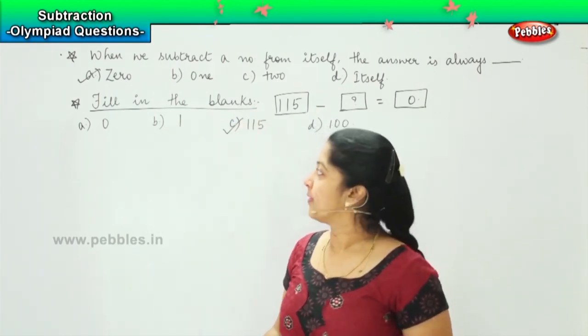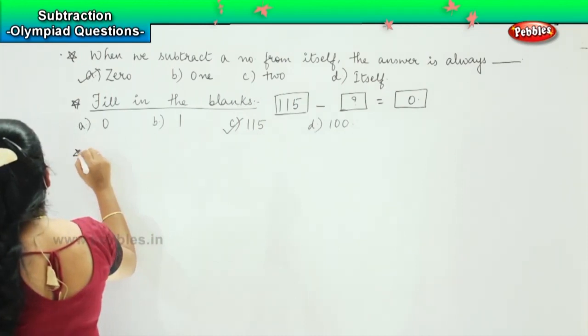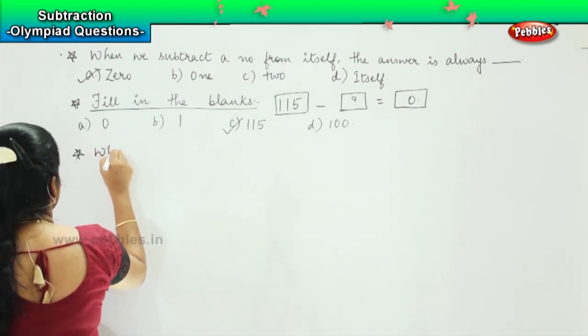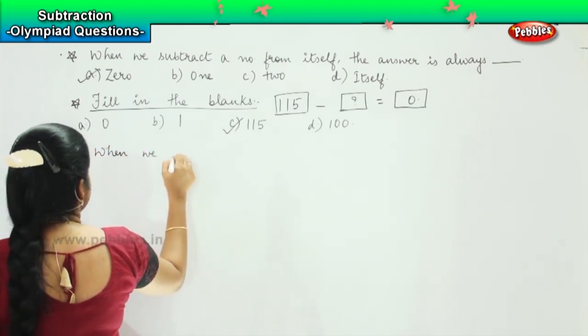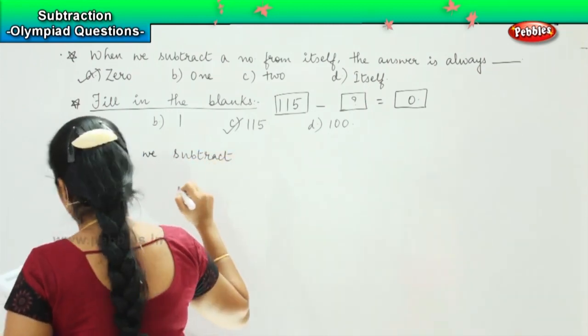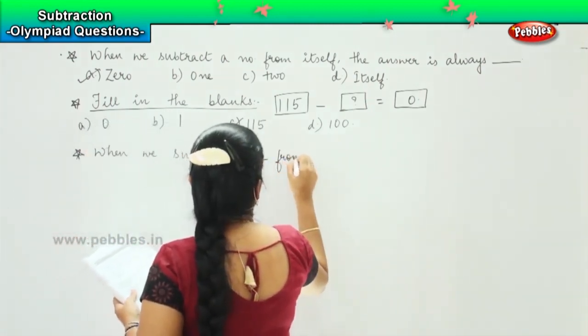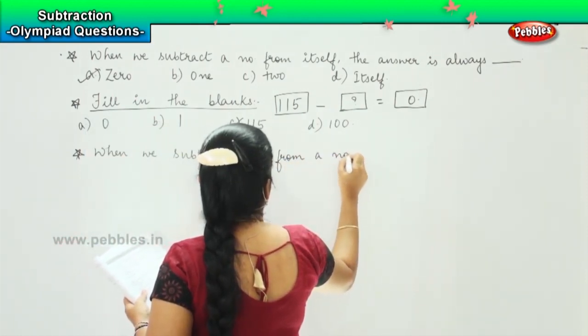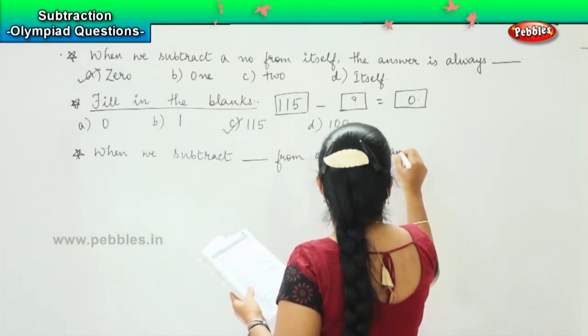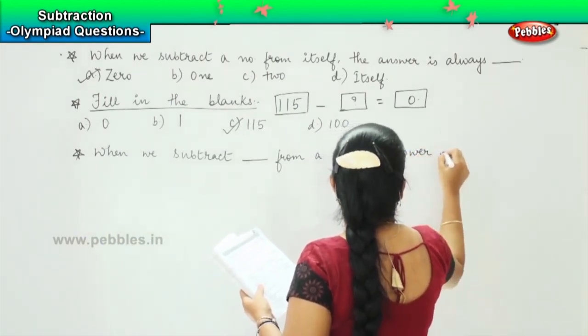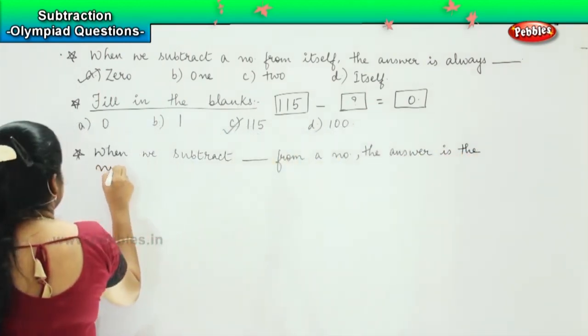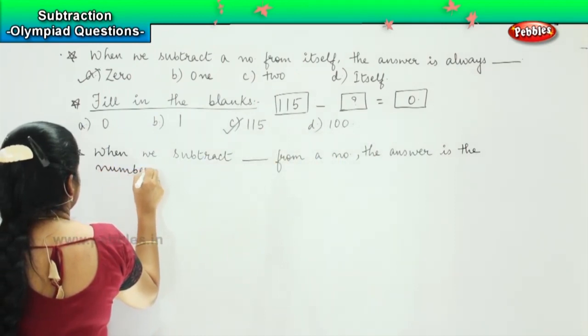The questions are simple, right? Okay. So here is your next question. When we subtract dash from a number, the answer is the number itself.